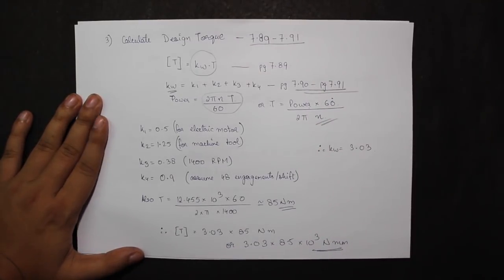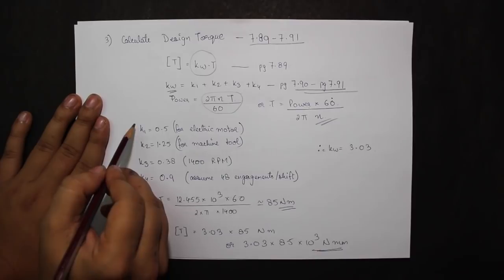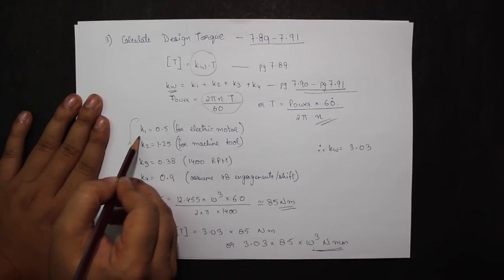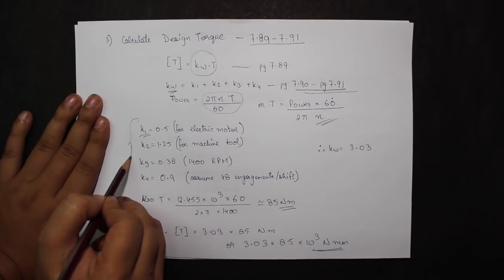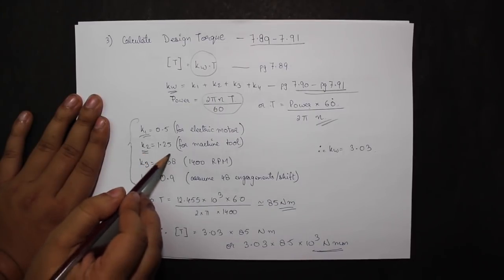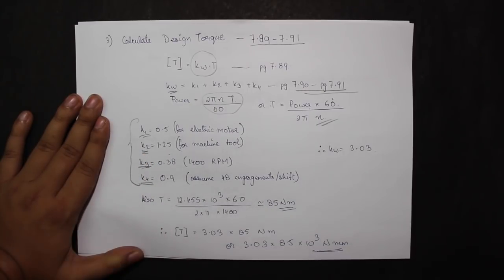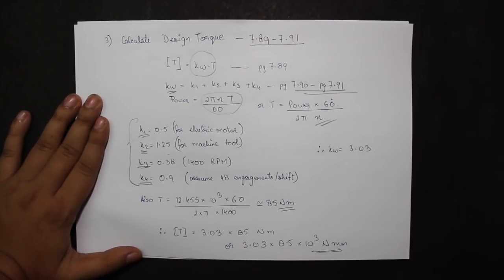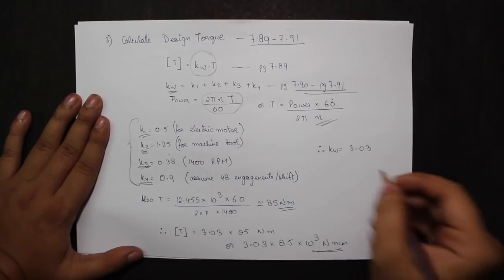Now I am taking the value for K1 as 0.5 as it is an electric motor, K2 as 1.25 for machine tool, K3 is 0.38 given 1400 rpm, and K4 is 0.9 assuming 48 engagements per shift. Therefore adding all of these, my Kw comes out to be 3.03.